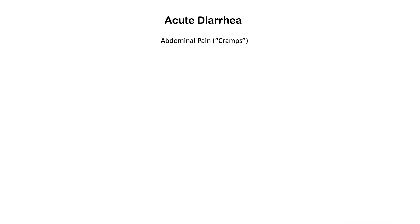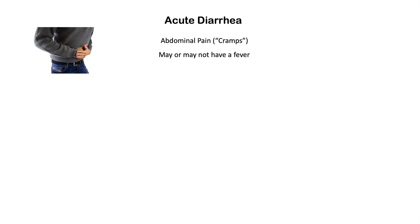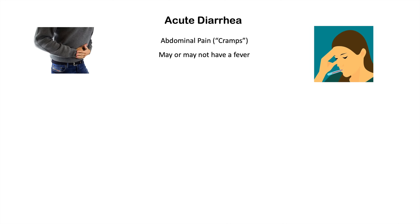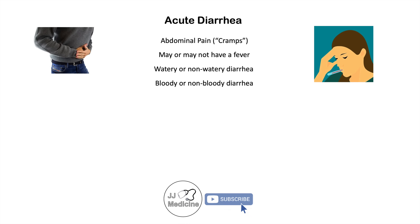What are some of the symptoms of acute diarrhea? One is abdominal pain — we call these cramps — which can be either diffuse or more localized. We may or may not have a fever. The diarrhea can be watery or non-watery, and it can be bloody or non-bloody. So how do we distinguish what causes these different types of symptoms?